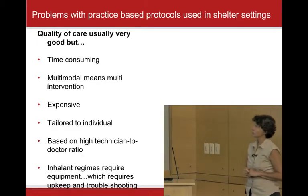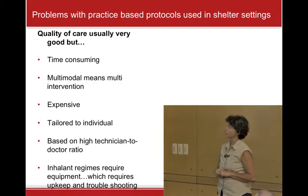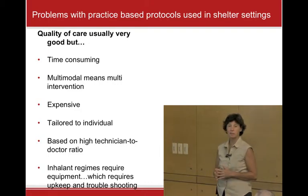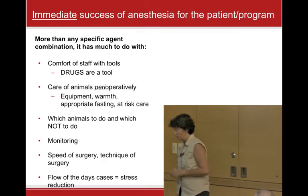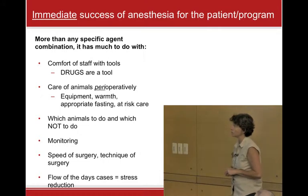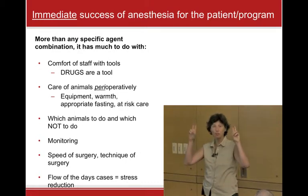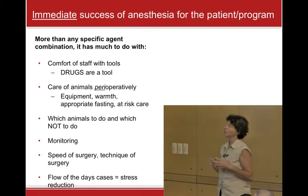Quality of care around anesthesia in a practice situation is usually extremely good, but it's time consuming — it involves pre-medding, putting in an IV catheter, pre-oxygenating, giving an induction agent, hooking them up to the machine. It's expensive and tailored to the individual. We just don't have that time in the shelter world. Much of the success for the patient and the program is really due to the comfort of the staff with whatever tools they use.